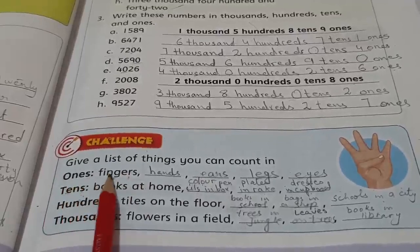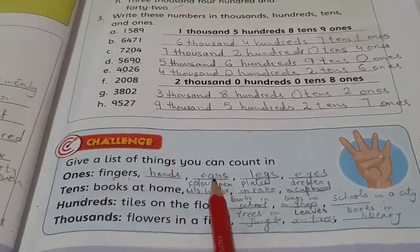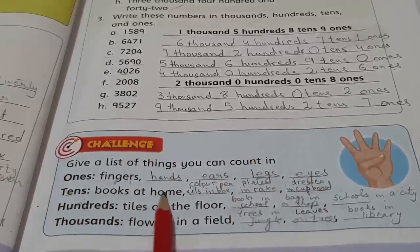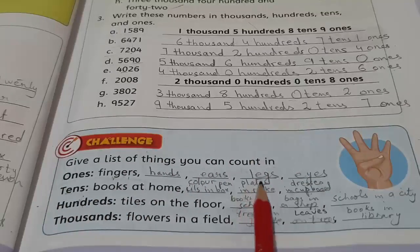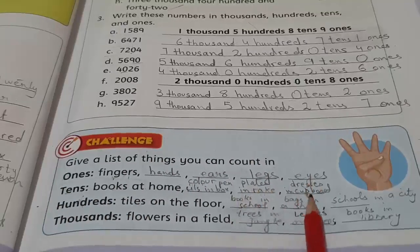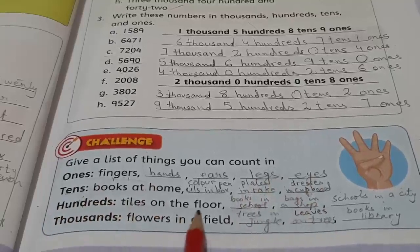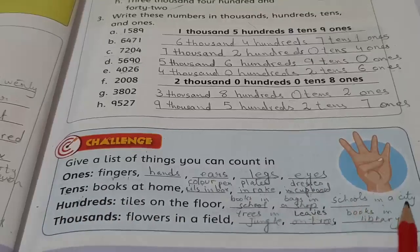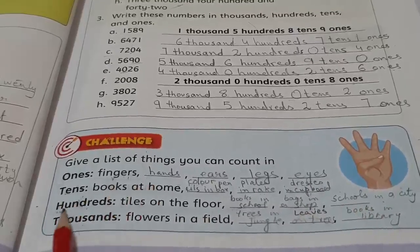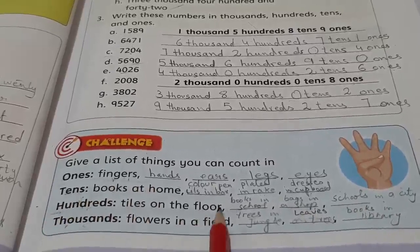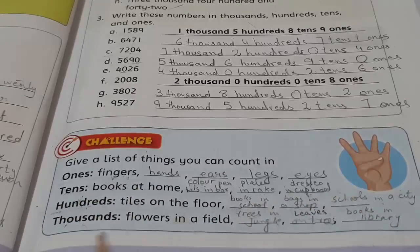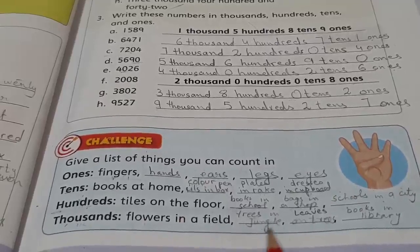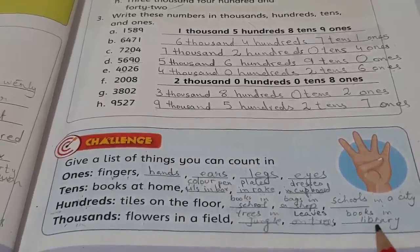In ones we can count fingers, hands, ears, legs, and eyes. In tens we count books at home, color pencils in box, plates in rack, dresses in cupboards. In thousands we count tiles on the floor, books in school, bags in a shop, schools in a city.